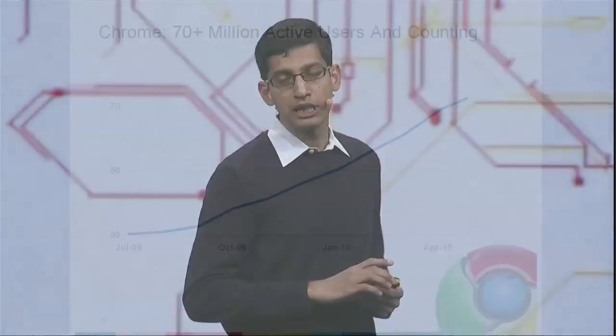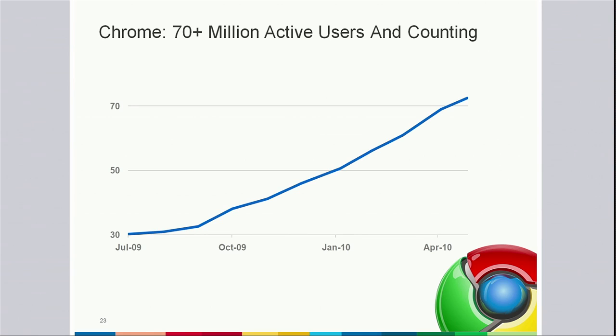We really hope you and everyone watching this will showcase applications like what we just saw. So what does it mean to build on the Chrome Web Store? It means that you can reach over 70 million users — these are primary users of Chrome as of today. As of today, we are over 70 million users, and the number is growing fast.